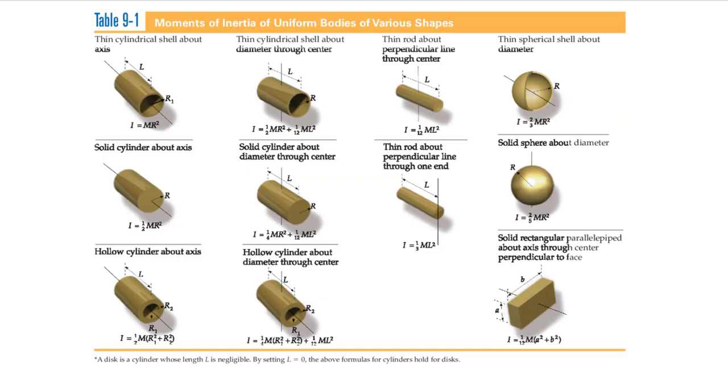But the table that we're usually given doesn't specifically tell you the moment of inertia at every single possible axis. For each shape here, it really only gives you one or two axes that go through particular points.